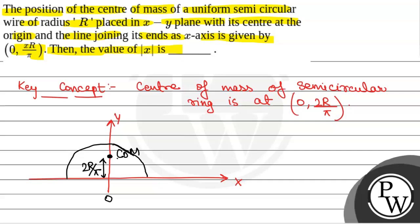So, if we compare which is given as 0, xr by pi, so the value of x in mod x that is equal to 2.